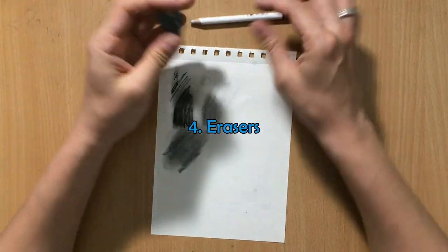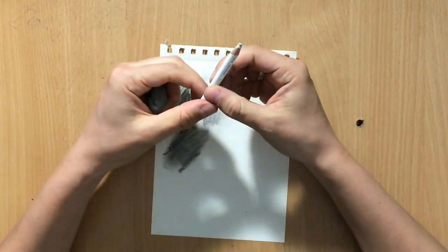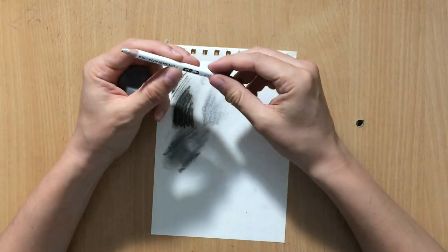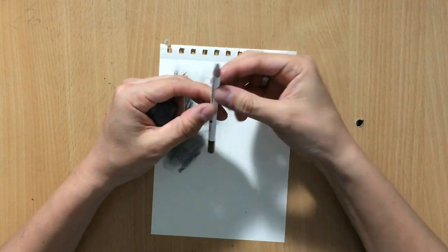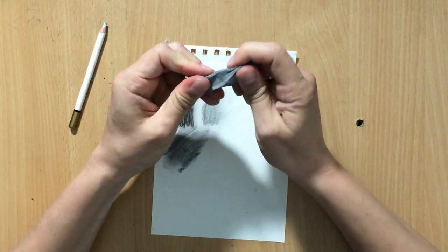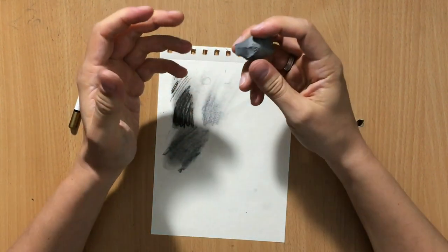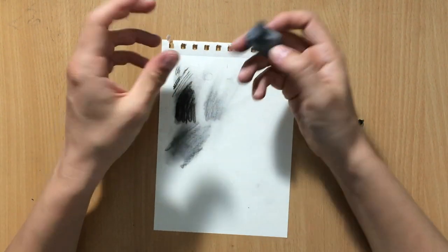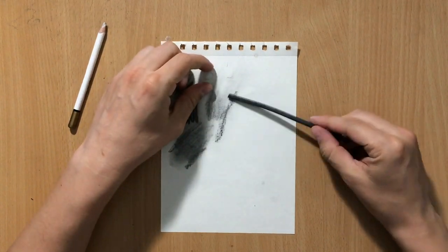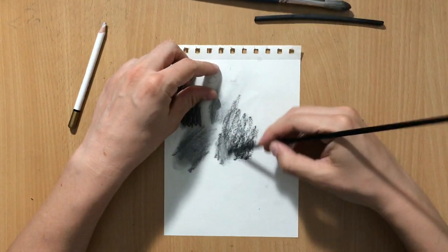Finally, we have erasers. There are two basic types: regular erasers and kneaded erasers. I like pencil erasers—this is a Koh-i-Noor pencil eraser, just a regular eraser in a pencil that can be sharpened and held like a pencil, which is convenient. Kneaded erasers don't require hard pressing and leave no residue. You can lift up charcoal and clean areas without residue.